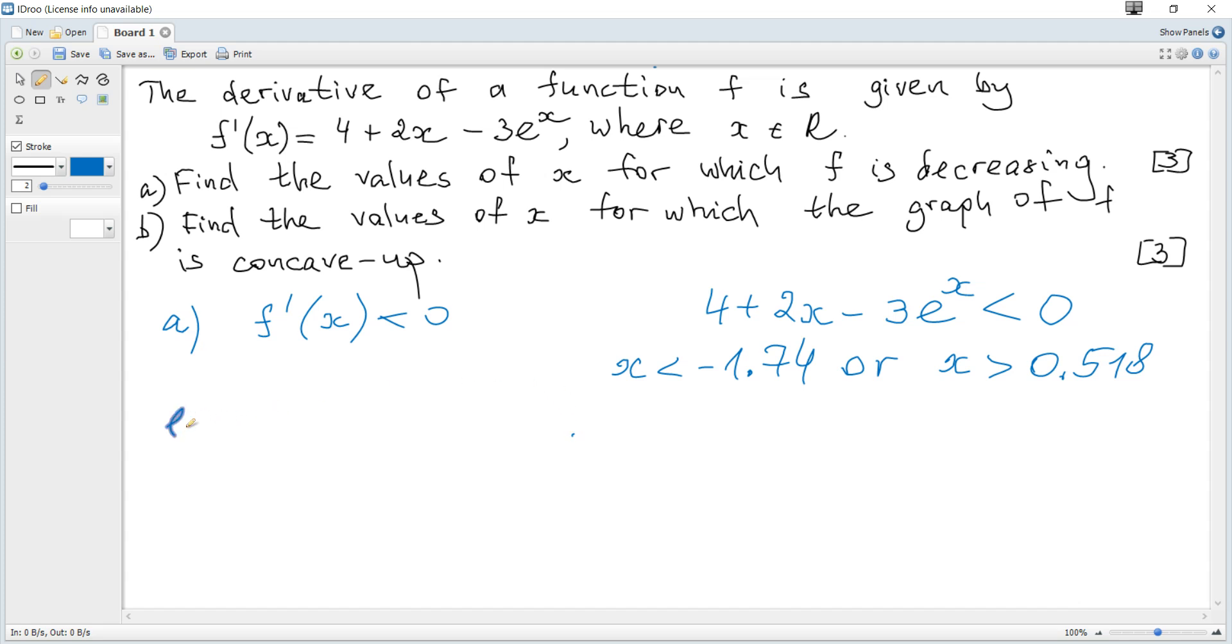The next question b: Find the values of x for which the graph of f is concave up. For a graph to be concave up, the second derivative must be greater than zero. The second derivative is the derivative of the first derivative.